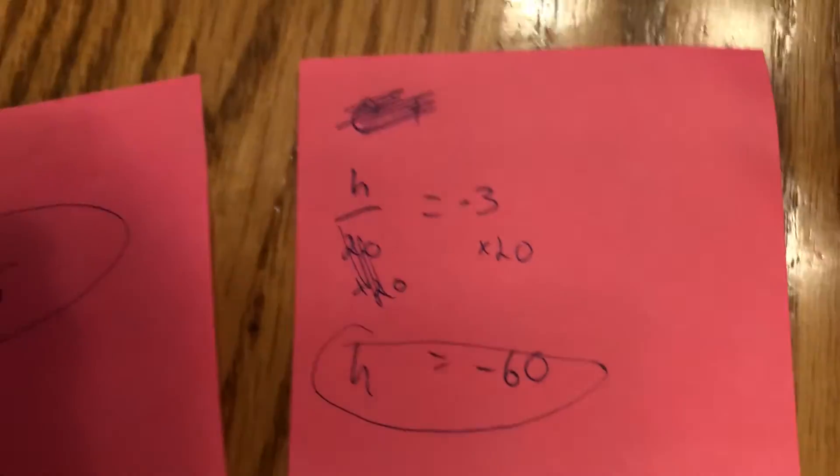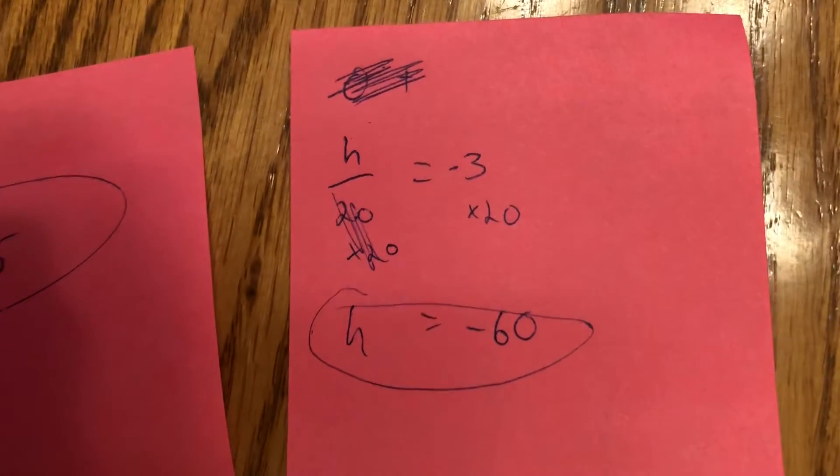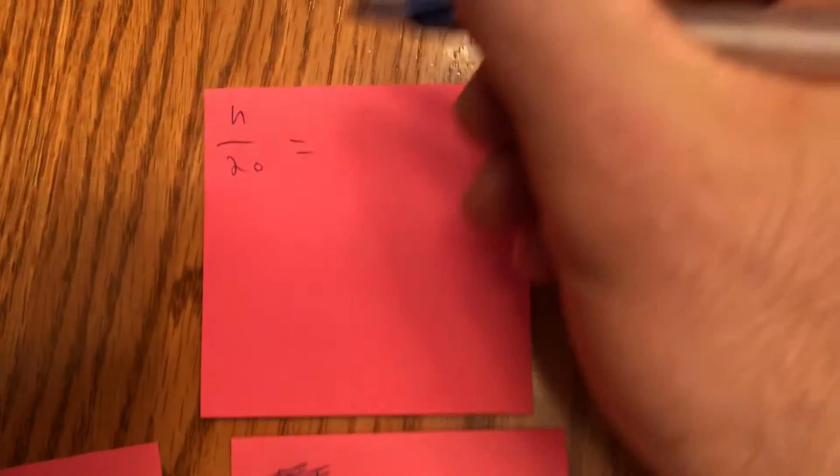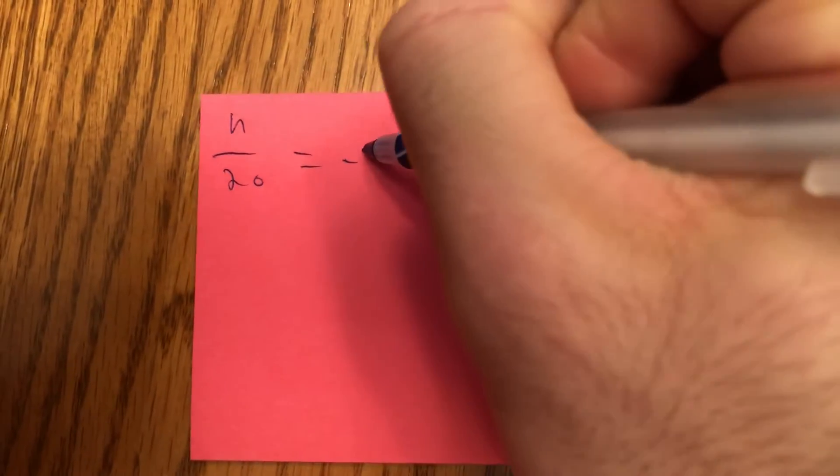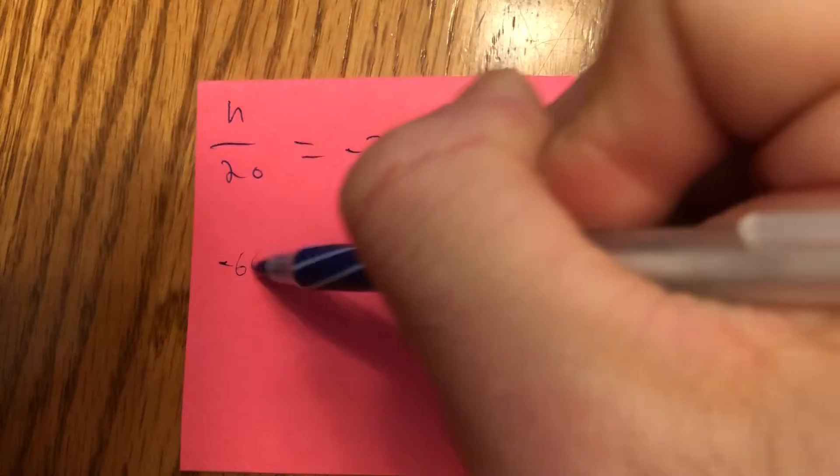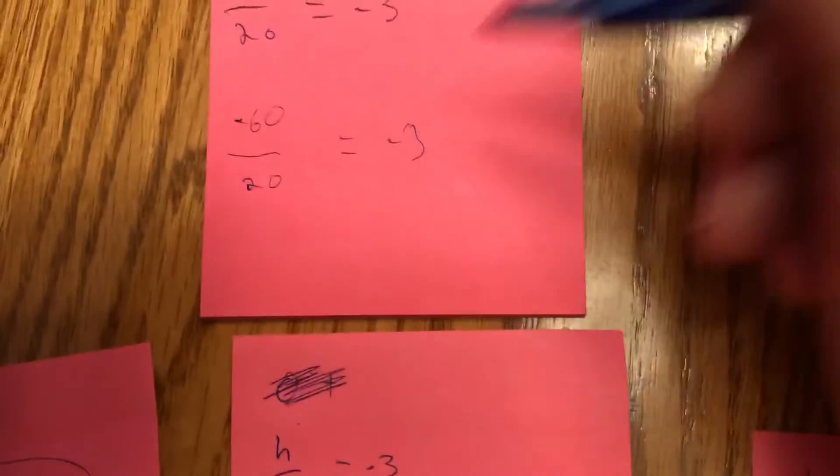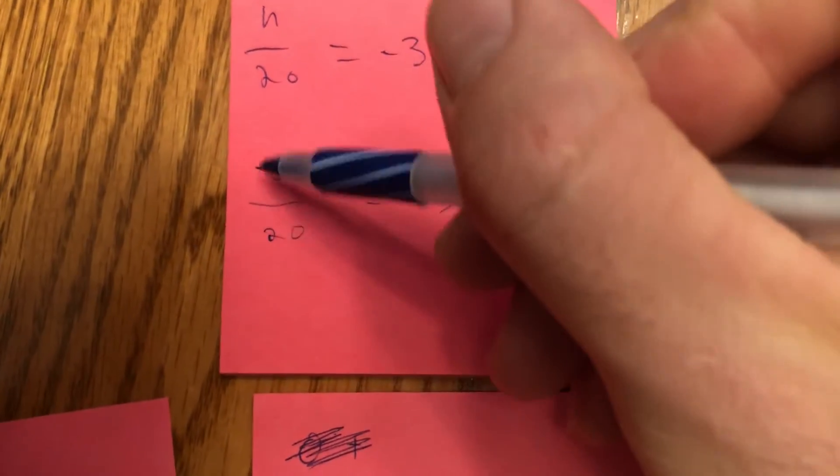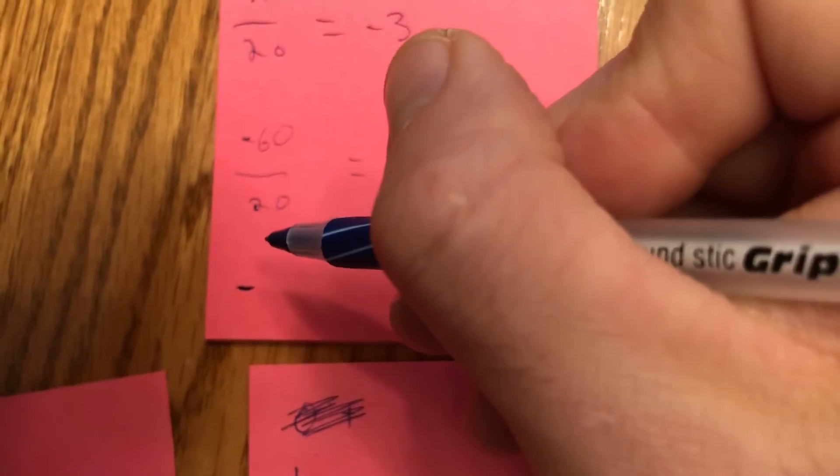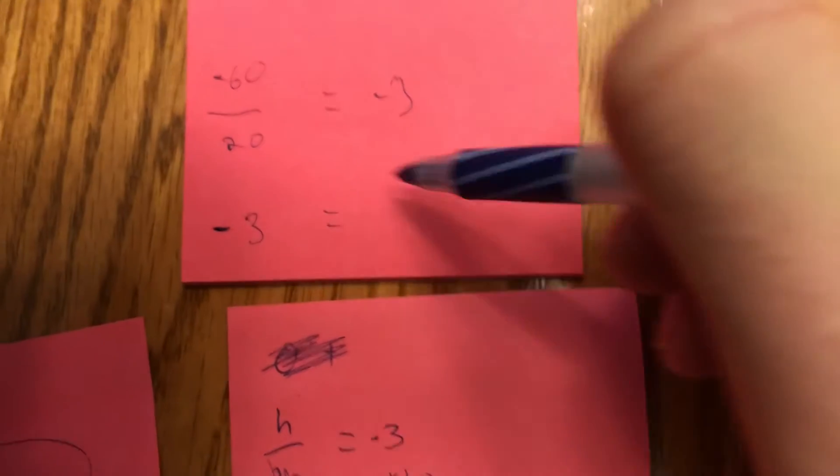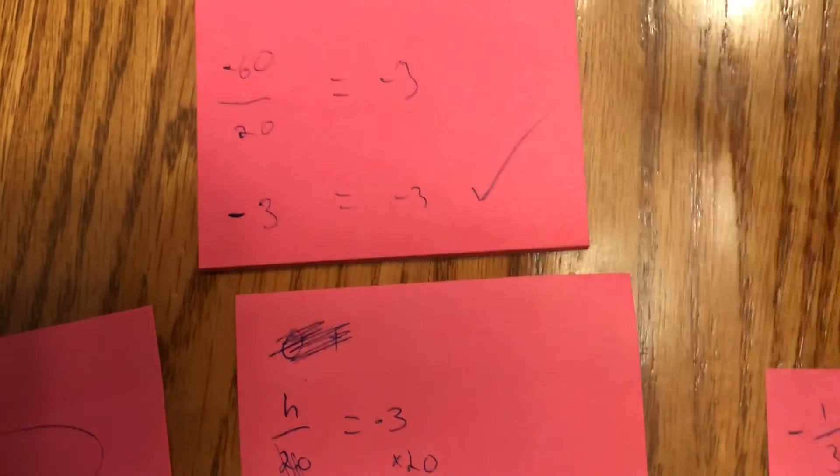Now, you might be thinking, like, well, I don't know. Makes sense, but I'm not 100% confident that that actually worked. Let's actually check our work. We can put negative 60 in for that h and see if this is legit. So, let's start out with that. Let's rewrite that equation. h divided by 20 is equal to negative 3. We said that our answer was negative 60. So, I'm going to put negative 60 in for h. Negative 60 over 20 is equal to negative 3. We have an odd number of negatives, so my answer is definitely going to be negative. 60 divided by 20 is 3. Equal negative 3. Check it out. She works. I could do that for all of these, but I think you guys get the point.